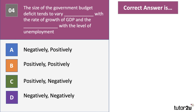Question four: the size of the government's budget deficit tends to vary something with the rate of growth of GDP and something with the level of unemployment. The budget deficit is the gap between government spending and tax revenues — how much the government has to borrow each year. If the economy goes into a downturn, the budget deficit tends to go up, so there's a negative relationship. If unemployment goes down, the government gets more tax revenue and pays out less in welfare, so the budget deficit also goes down. The correct answer is A — a negative relationship with GDP growth and a positive relationship with the rate of unemployment.